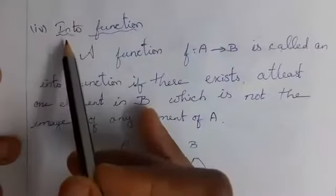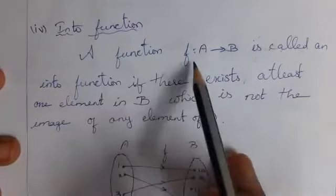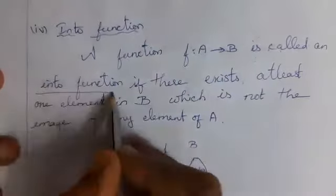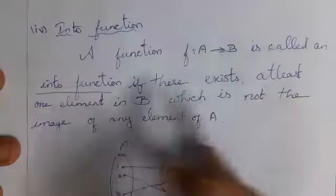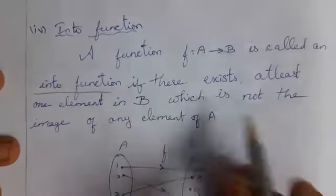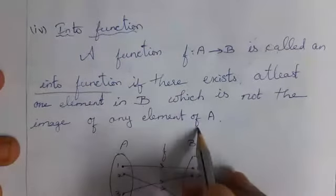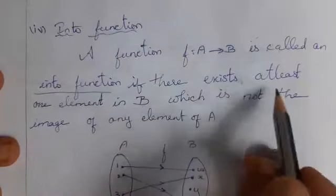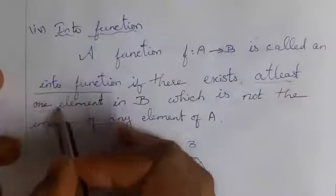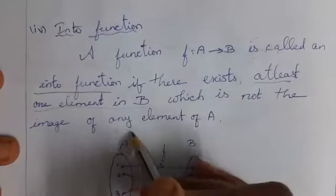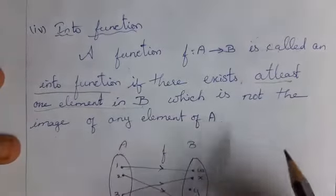Fourth one: into function. A function f from A to B is called an into function if there exists at least one element in B which is not the image of any element of A.